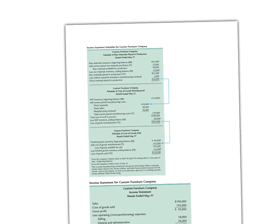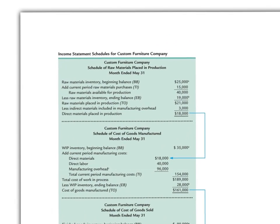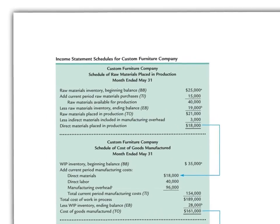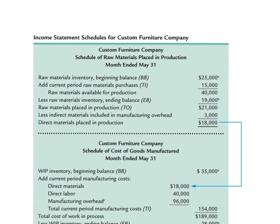Let's take a closer look at the first schedule: the schedule of raw materials placed in production. This schedule tells us the amount of materials that are actually placed into production from the raw materials warehouse. Using our equation — beginning balance plus transfers in minus ending balance equals transfers out — we start with a raw materials beginning balance of $25,000. This beginning balance appears on the balance sheet, so it is not hard to find for most manufacturing companies.